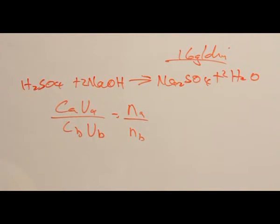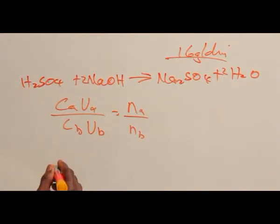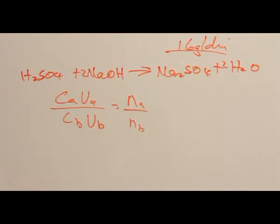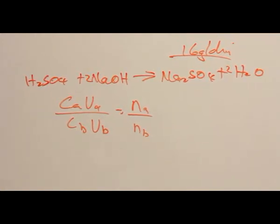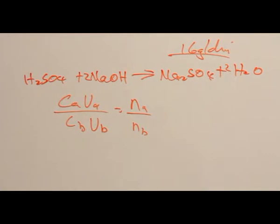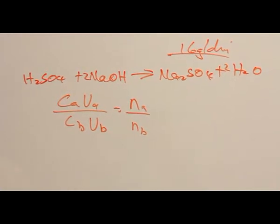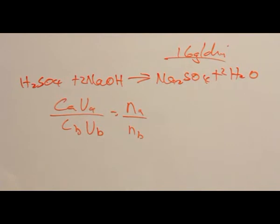CA, the concentration of the acid, is not known. But, we are given the concentration of the base to be 6.00 grams per dm³. So, we need to convert that concentration from grams per dm³ to mole per dm³.